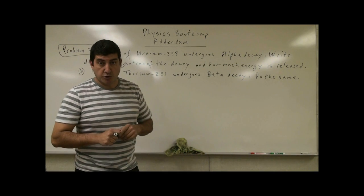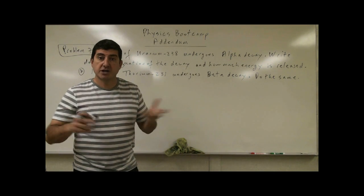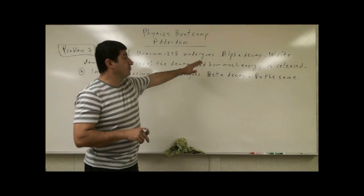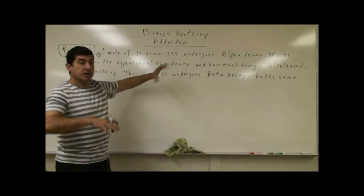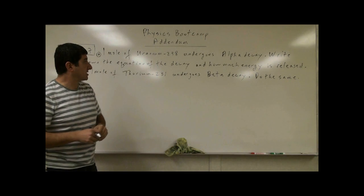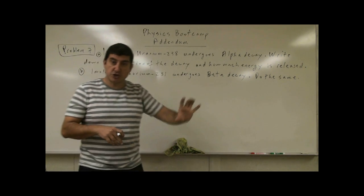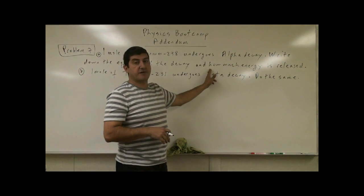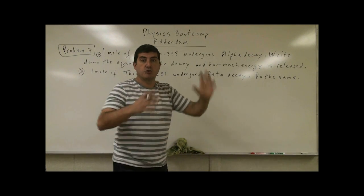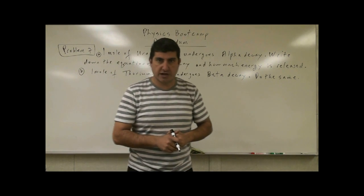When I was going through the questions portion of the addendum, we talked about beta decay, we talked about alpha decay. So this problem is built on that. We have to be able to write down the equation of the decay, but we have to go one step further. We have to find out how much energy is released using Einstein's equation E equals mc squared.